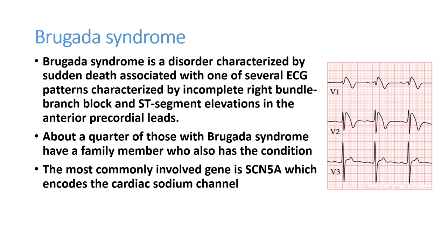The syndrome is characterized by sudden death associated with an ECG pattern showing an incomplete right bundle branch block-like pattern — not true RBBB, but an RBBB pattern — and ST segment elevation in the anterior precordial leads V1, V2, V3. On ECG, you can see an RSR' pattern, but it is not typical RSR'; it is RSR' with ST elevation, resembling RBBB with acute anterior wall MI.